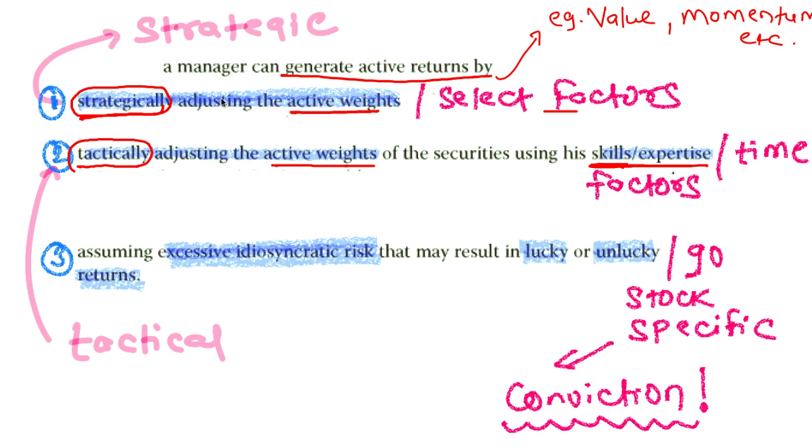Point two: tactically adjusting the active weights, so now we are on the timing part of securities, and this part in general is allocated to skill or expertise. And third, some fund managers don't care value or growth, they don't care the timing, they just look at the stock and feel so convinced about it that they put a large chunk of their portfolio in few select stocks. This is neither assigned to any particular factor nor about timing; it's about stock picking. This is referred to as an idiosyncratic component, the unsystematic component, and it could be assigned to either luck or skill.